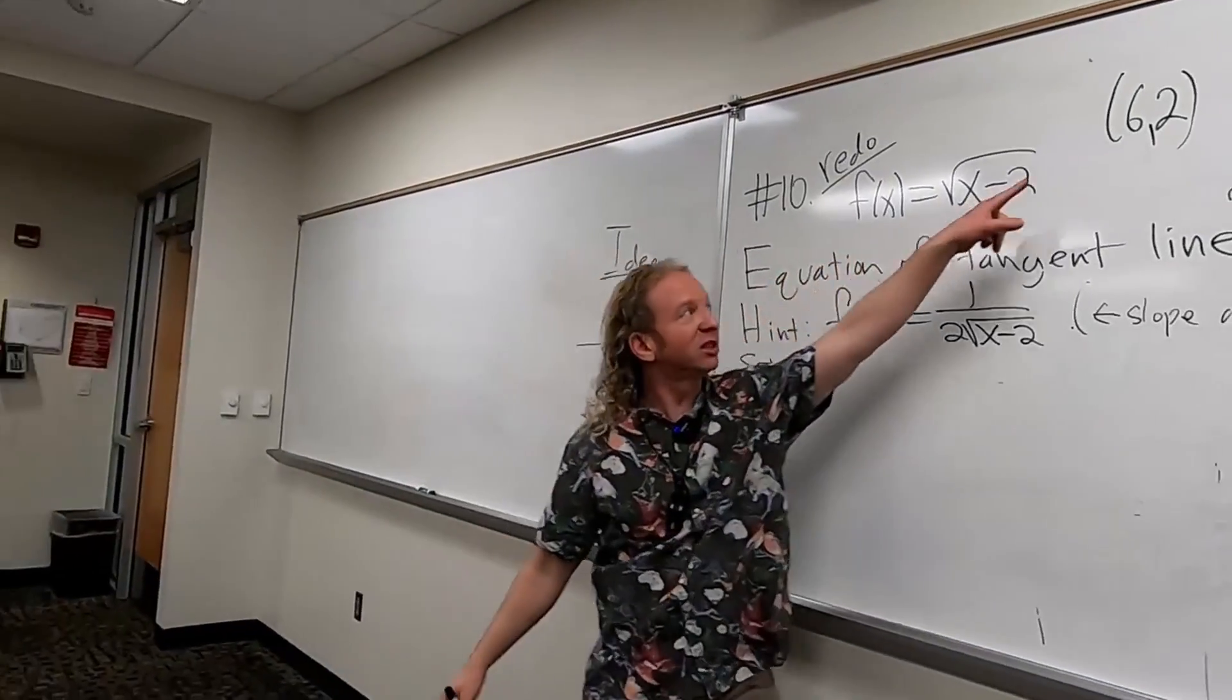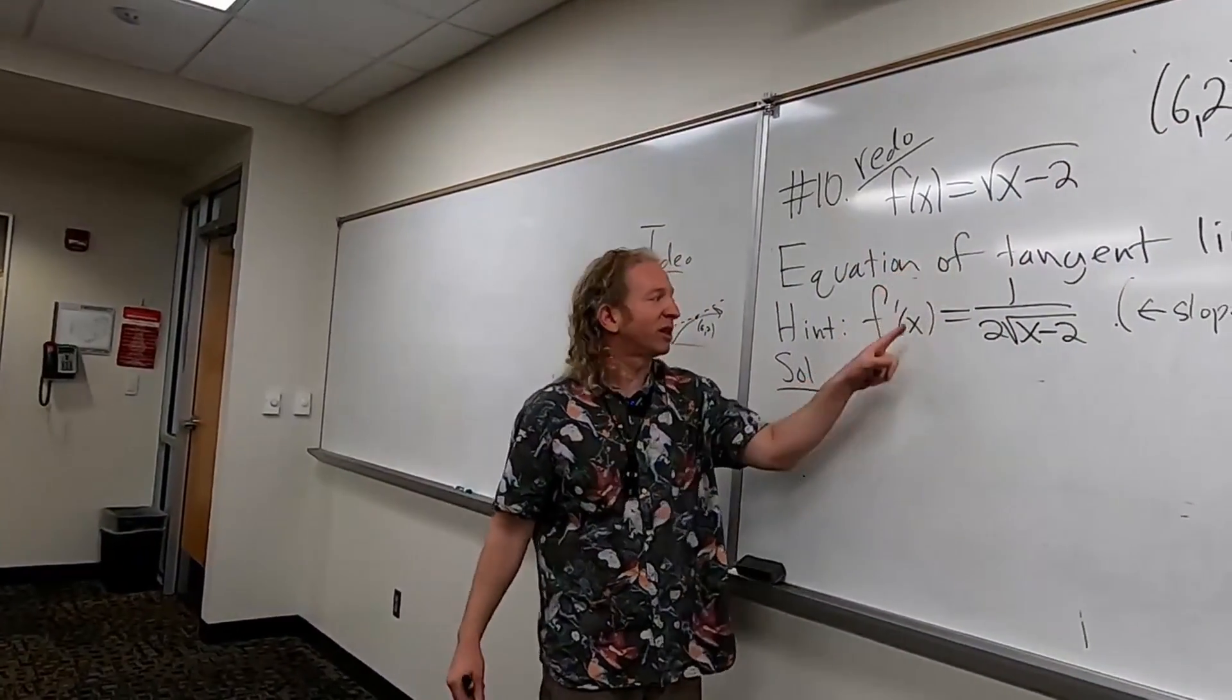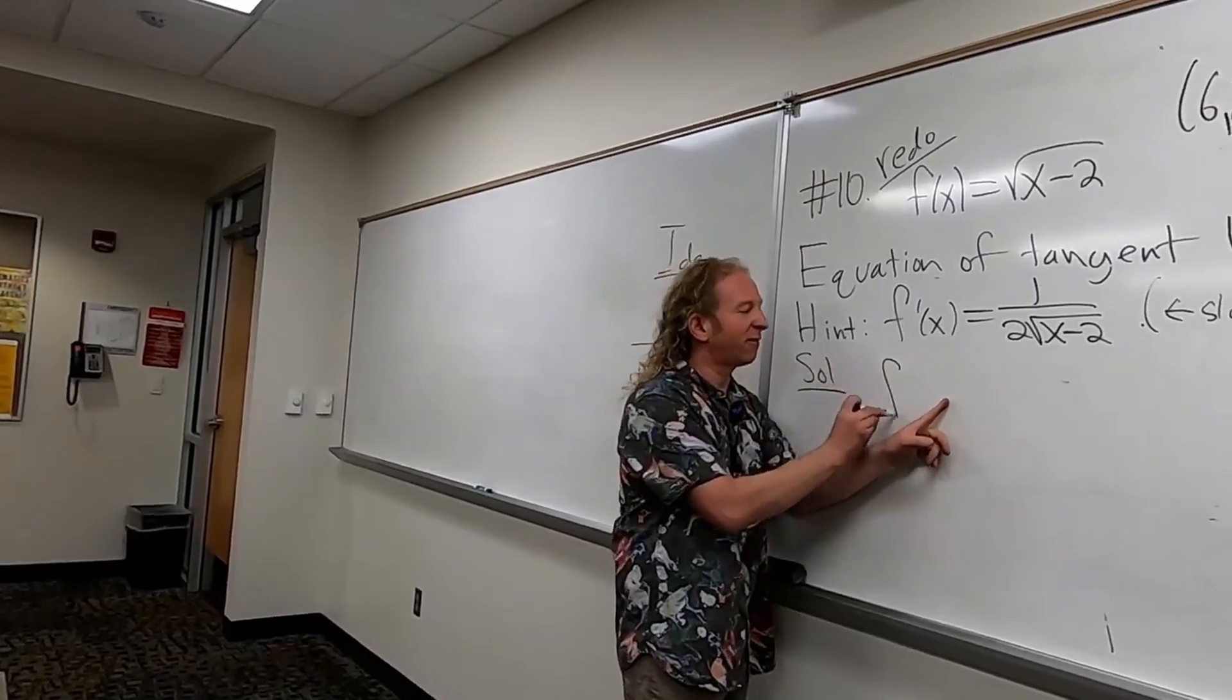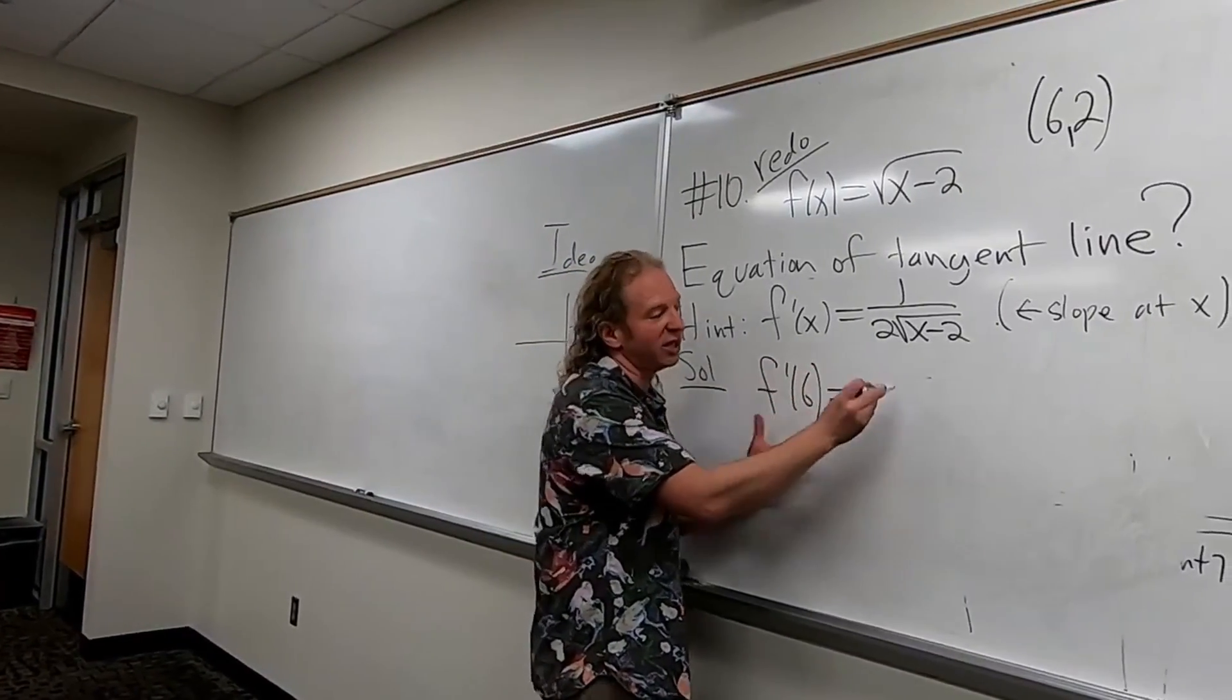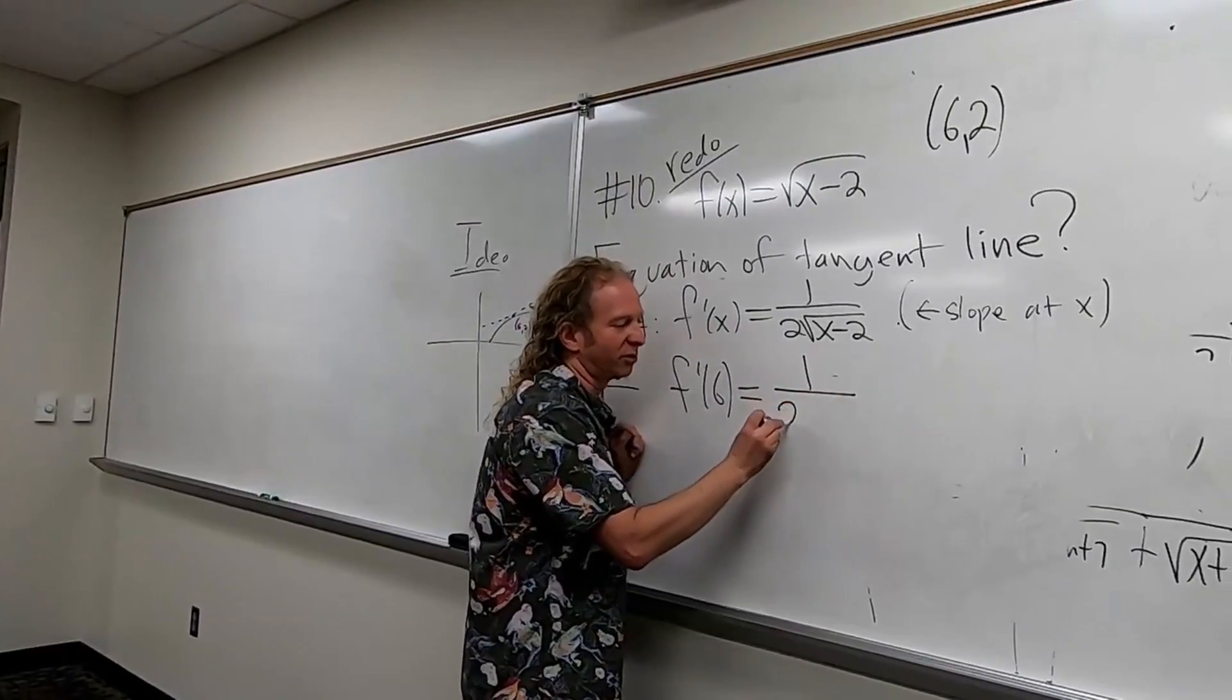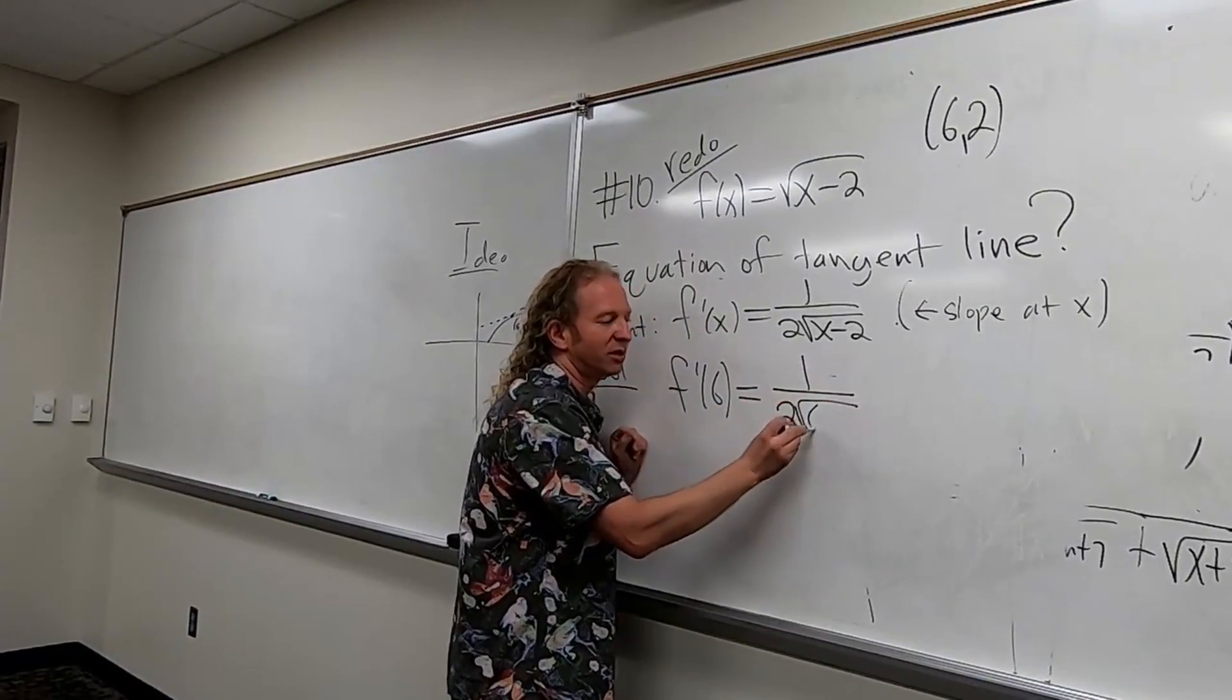So we need the slope at x equals six. So all we do is we plug in six. So f prime of six equals, this is really easy if you just have to know how to do it. So two square root six minus two.